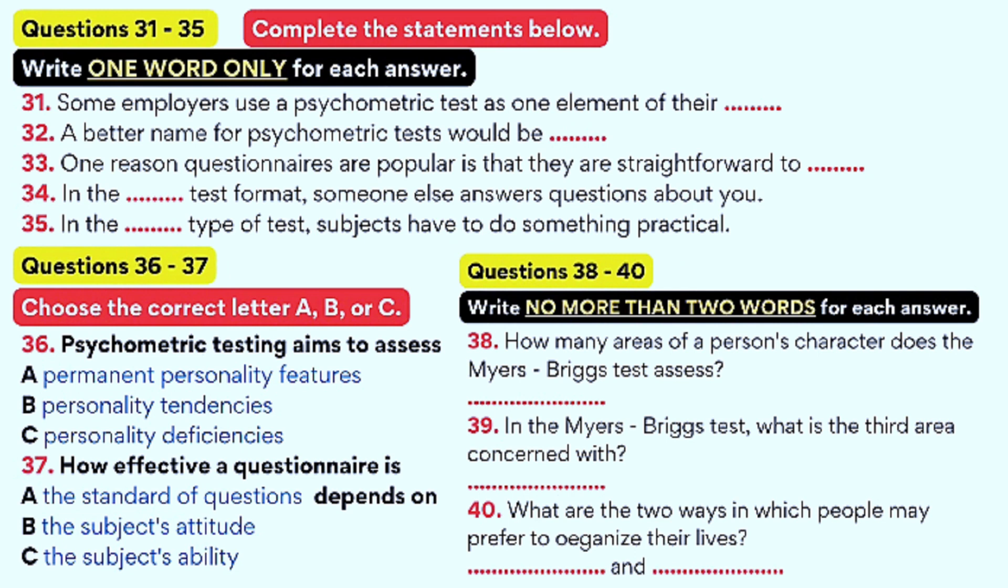Projective tests ask the subject to make sense of information which is unclear in some way. In the famous inkblot test, for example, subjects have to say what a patch of ink on a piece of paper looks like to them. Finally, objective tests. In these tests, the subject has to engage in a physical activity. How they do it will tell the tester something about their personality. For example, the subject might be asked to blow up a balloon until it bursts. From observing how the subject does this, the tester will be able to say how timid or brave he or she is.